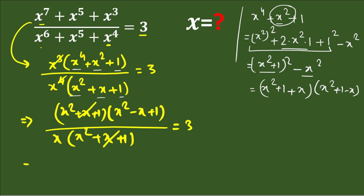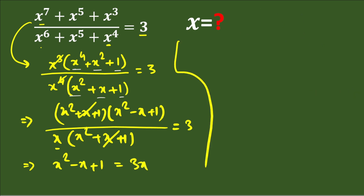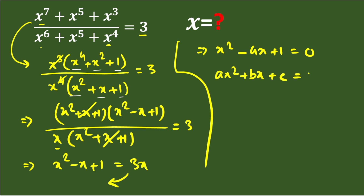After cancellation, the numerator becomes x² − x + 1, and multiplying by x gives 3x on the right-hand side. Taking 3x to the left-hand side, we get x² − 4x + 1 = 0. This is in the form ax² + bx + c = 0, which is a quadratic equation.